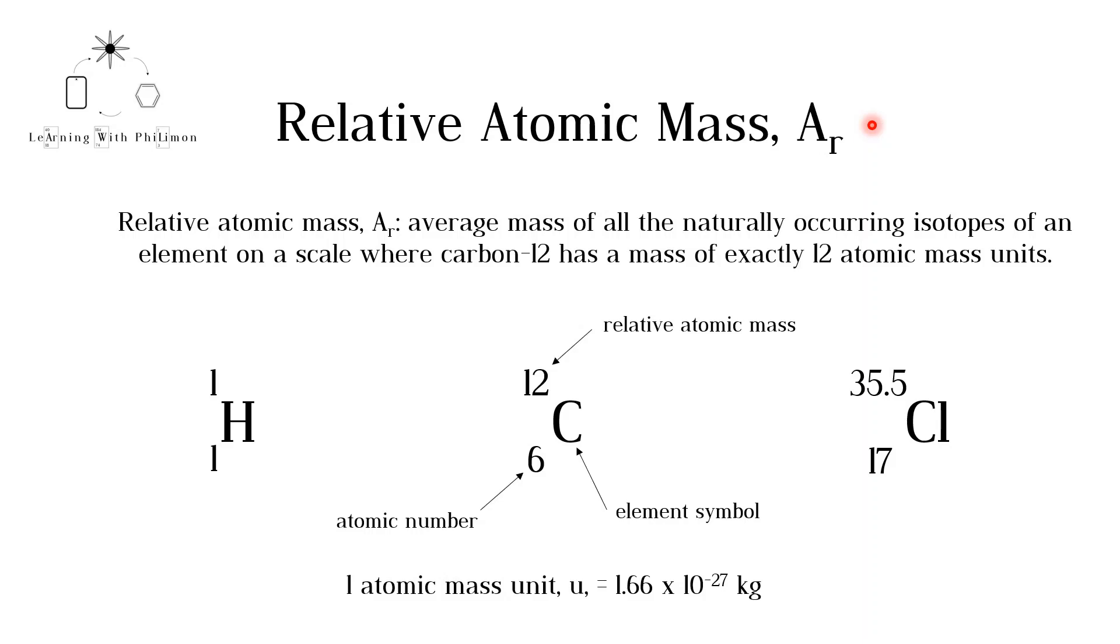On the periodic table, you will find the element symbol of all the elements, along with the atomic number, which gives you the number of protons, and the relative atomic mass.